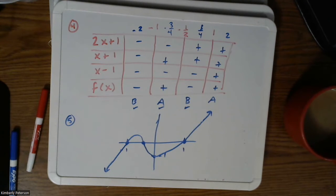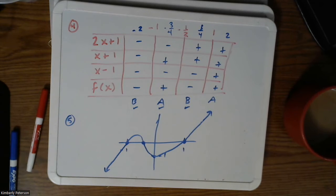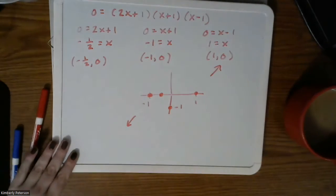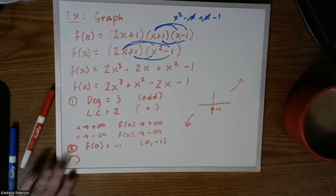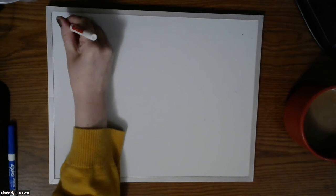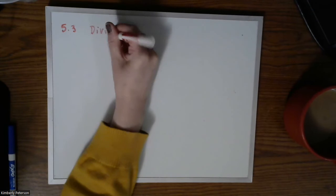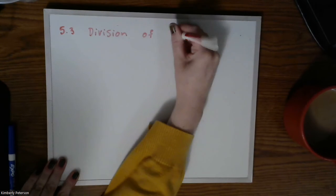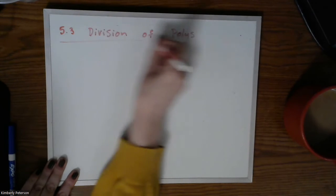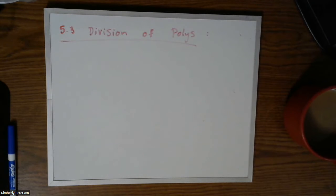I'd like to go ahead and start on section 5.3. In this section we are going to do division of polynomials and talk about a couple of theorems. We probably won't get through it all today, but I would at least like to introduce the topics. The best way to start is to look at a couple of examples and then some notation.